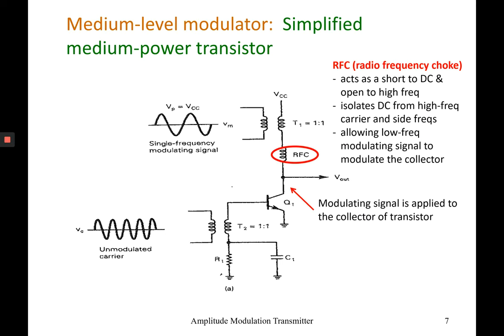For the next one, the medium-level modulator, this is the simplified medium-power transistor circuit. The base will connect to the carrier, and for the collector, it will connect to the modulating signal and use an RFC — radio frequency choke — that acts as a short to DC and open to high frequency. The RFC also isolates the DC from the high frequency carrier as well as side frequencies, and allows the low-frequency modulating signal to modulate the signal from the collector and produce the output.